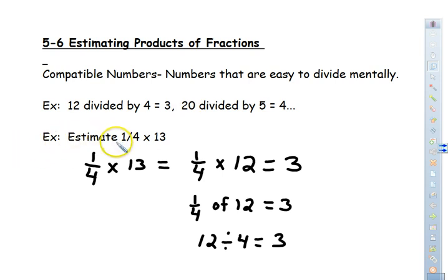So when we are estimating, this says 1/4 times 13. Or you could also say 1/4 of 13. And the word of, again, always means multiply. So when we say 1/4 times 13, and we are trying to find a number that the denominator will go into this number evenly.